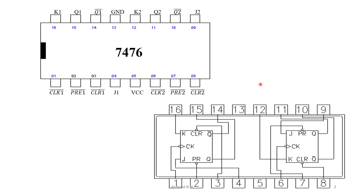Let us have a brief overview of the 7476 IC. The 7476 is a 16-pin IC and it internally consists of two JK flip-flops. These two JK flip-flops are independent of each other. In this diagram, we can observe two independent JK flip-flop configurations, represented with suffix 1 for the first JK flip-flop and suffix 2 for the second JK flip-flop.